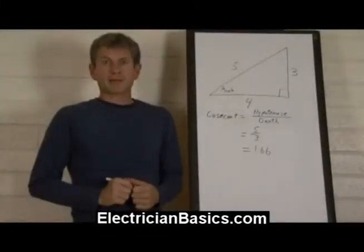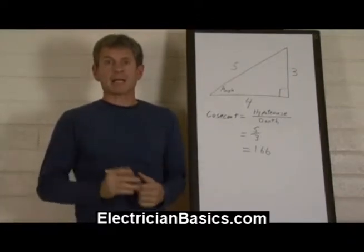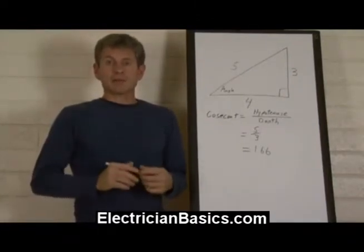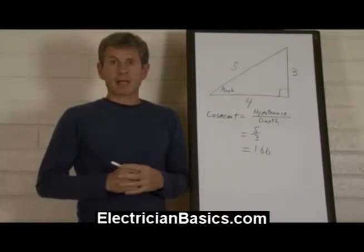We spoke earlier of a right triangle with the dimensions in the ratio 3, 4, and 5. So let's use our cosecant and see what we can come up with with a certain angle of this triangle.